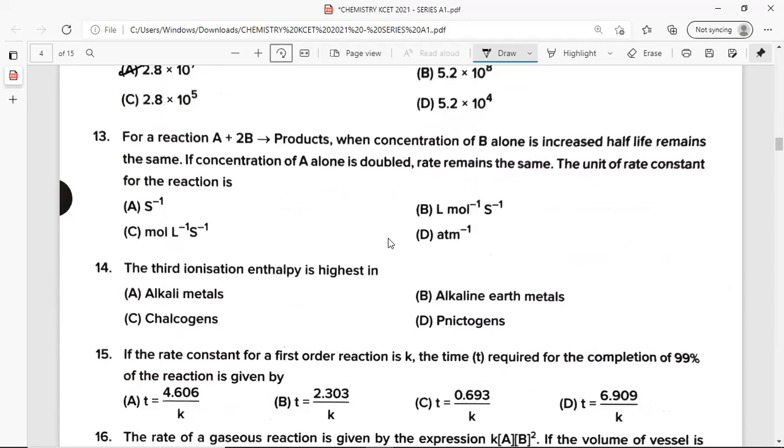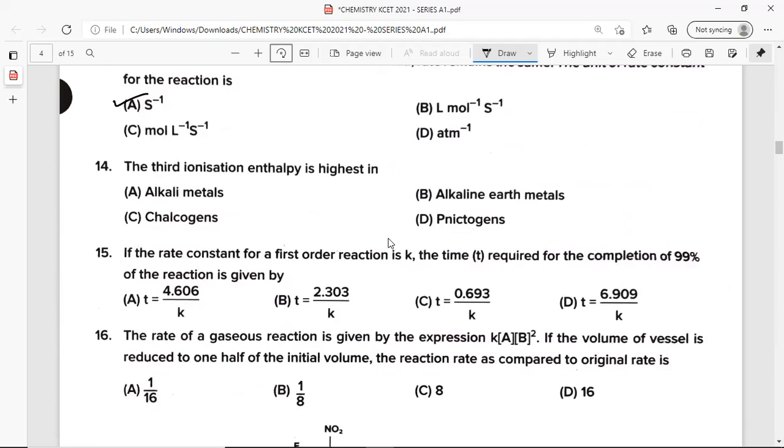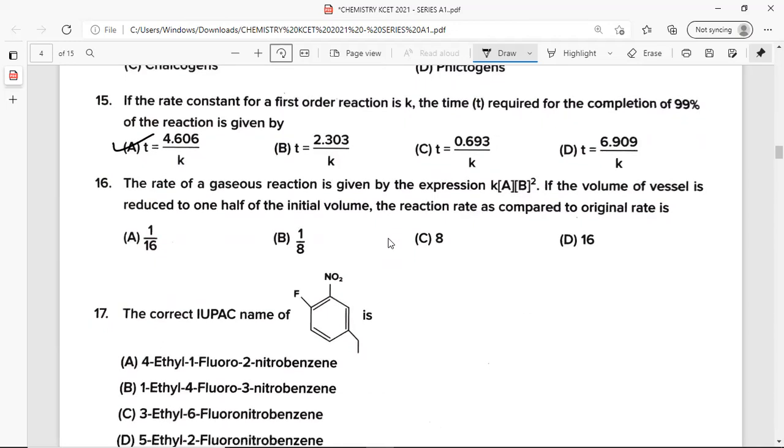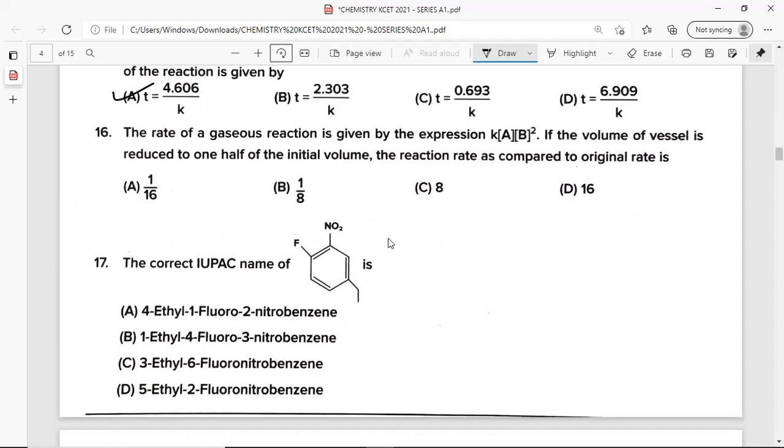For a reaction A plus 2B gives rise to products, when concentration of B alone is increased, half life remains the same. If concentration of A alone is doubled, rate remains the same. Then the unit of rate constant for the reaction is option A, per second. Question 14: The third ionization enthalpy is highest in option B, alkaline earth metals. Question 15: If the rate constant for a first order reaction is K, the time T required for the completion of 99% of the reaction is given by option A, T which is equal to 4.606 divided by K. Question 16: The rate of a gaseous reaction is given by the expression K, concentration of A, concentration of B to the power 2. If the volume of vessel is reduced to one half of the initial volume, the reaction rate as compared to original rate is option C, that is 8 times.